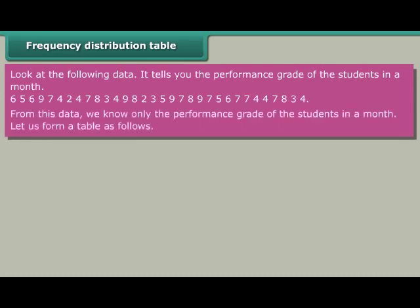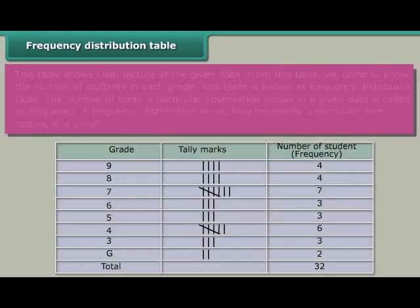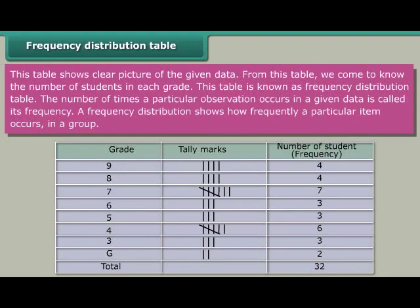From this data, we know only the performance grade of the students in a month. Let us form a table. This table shows a clear picture of the given data, and from it we come to know the number of students in each grade. This table is known as a frequency distribution table. The number of times a particular observation occurs in a given data is called its frequency. A frequency distribution shows how frequently a particular item occurs in a group.